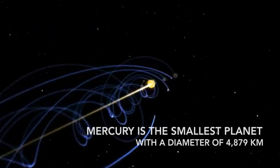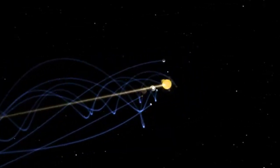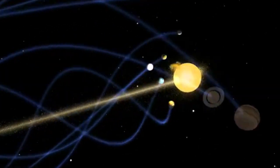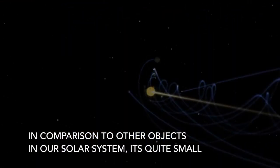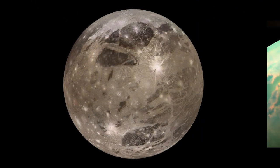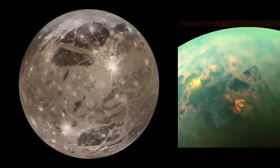Mercury is the smallest planet with a diameter of 4879 kilometres. This makes it about two-fifths the size of Earth. Although that is still extremely big, in comparison to other objects in our solar system, it's quite small. For example, there's moons such as Ganymede and Titan, which are the largest moons in our solar system, that are larger than Mercury.